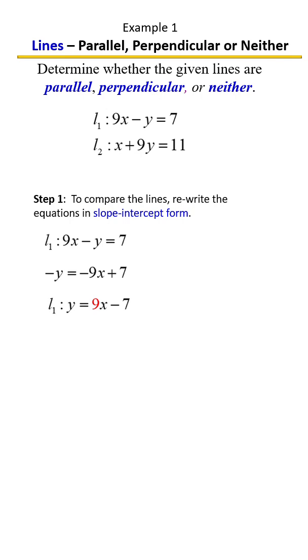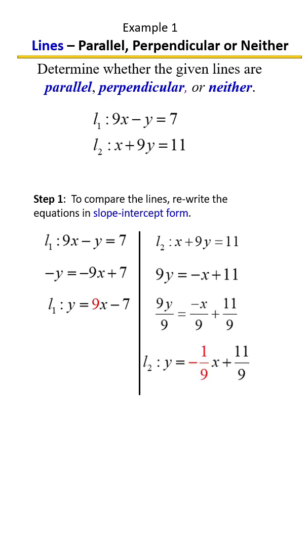Let's go to line two. To put line two in slope-intercept form, meaning solve for y, we're going to subtract x from each side, divide by nine, and as you can see here we have a slope of negative one ninth.